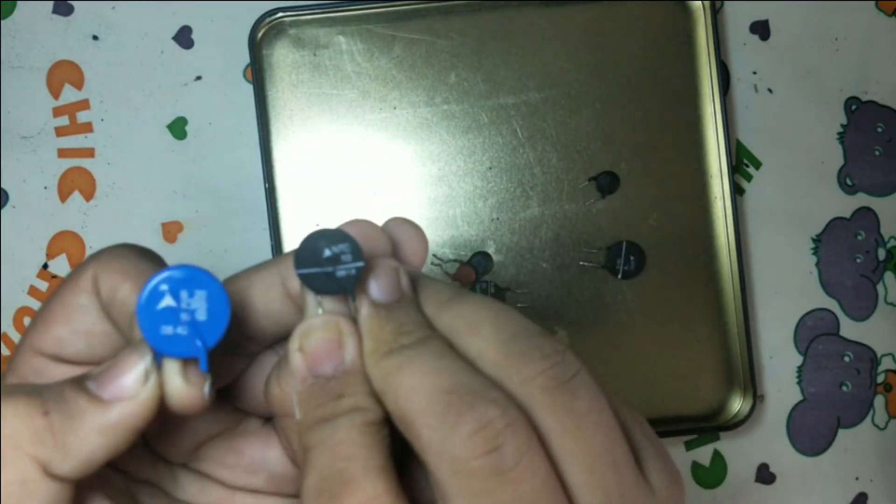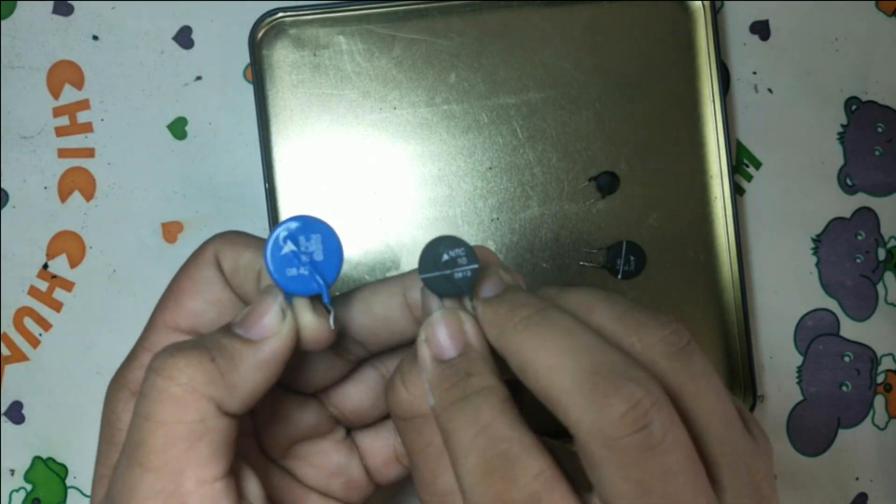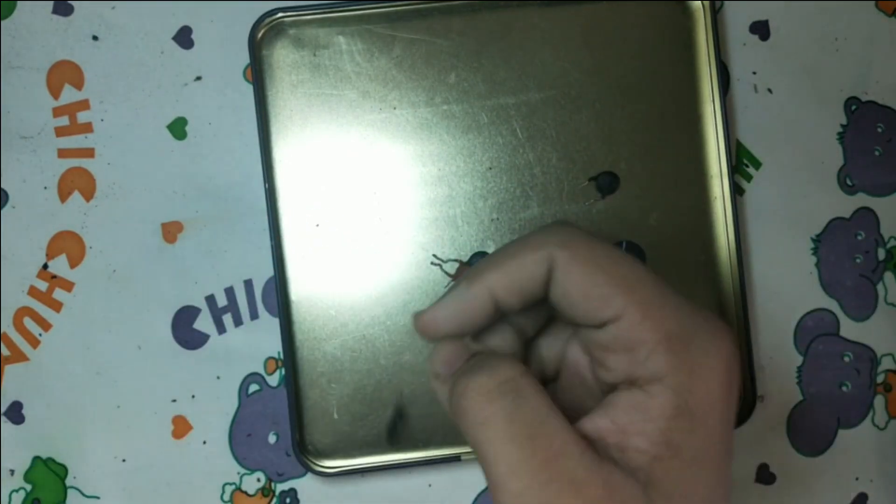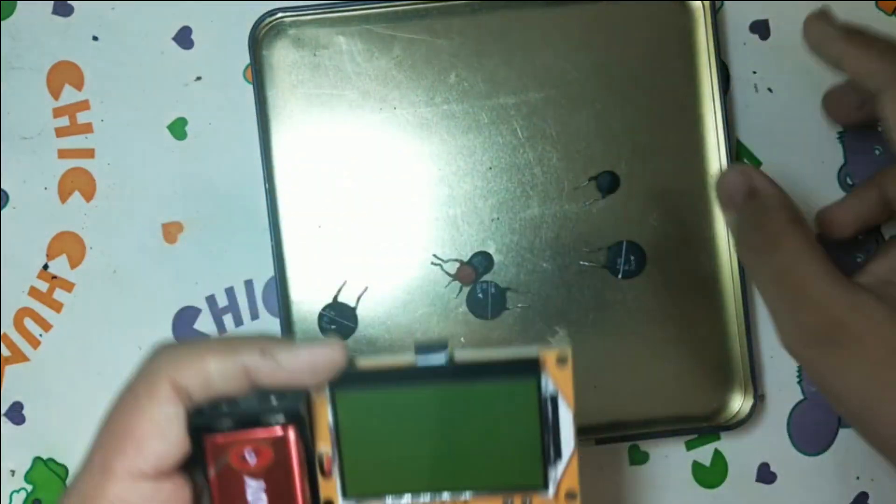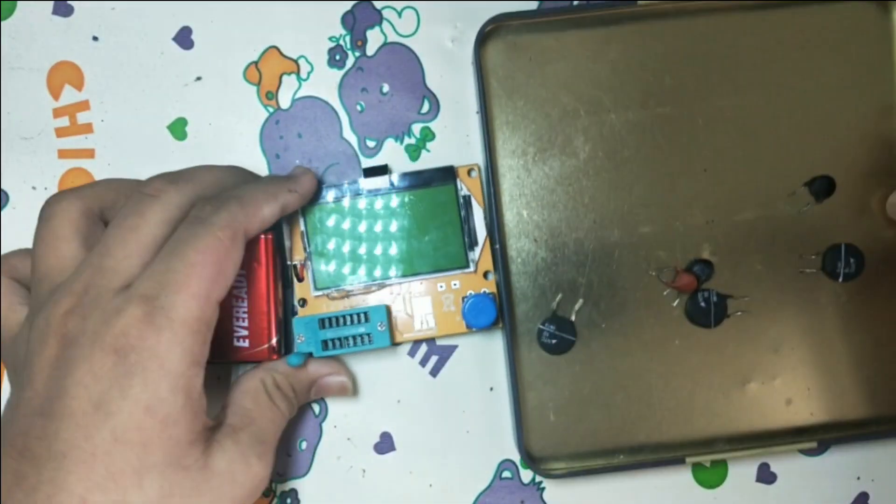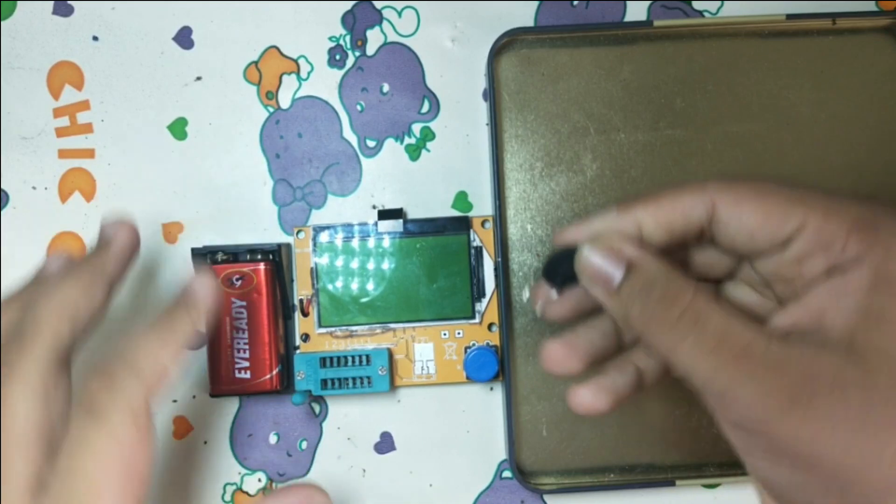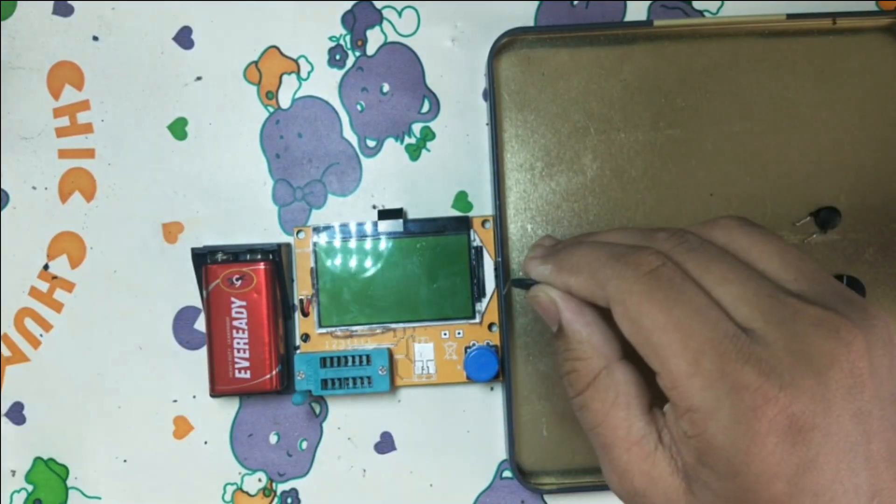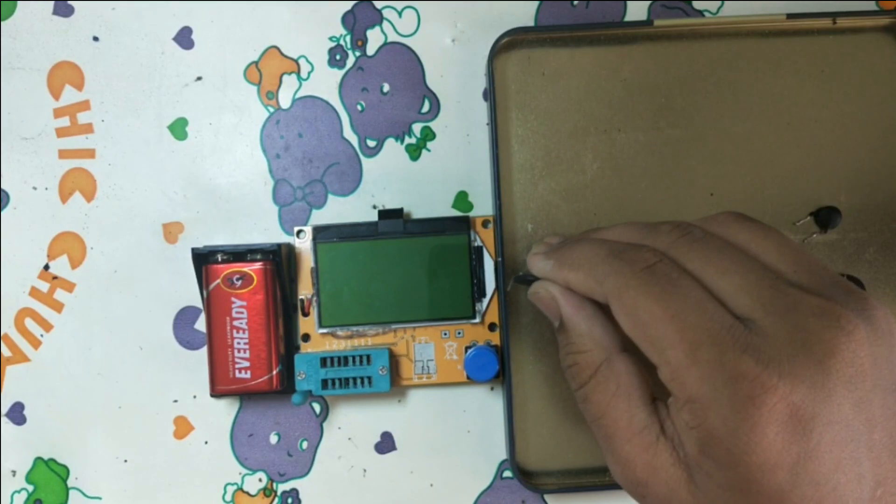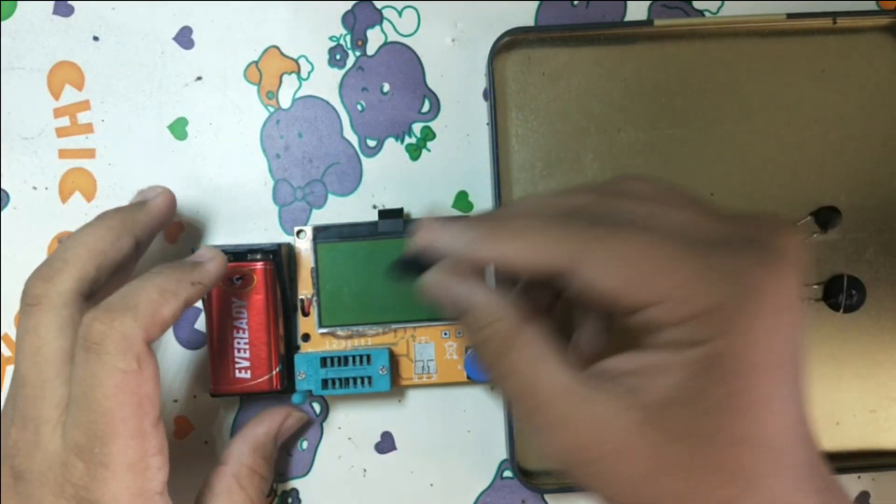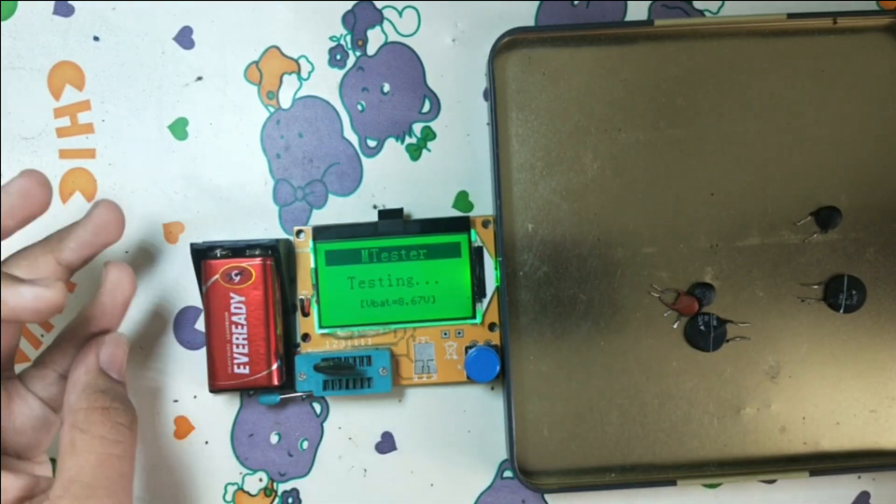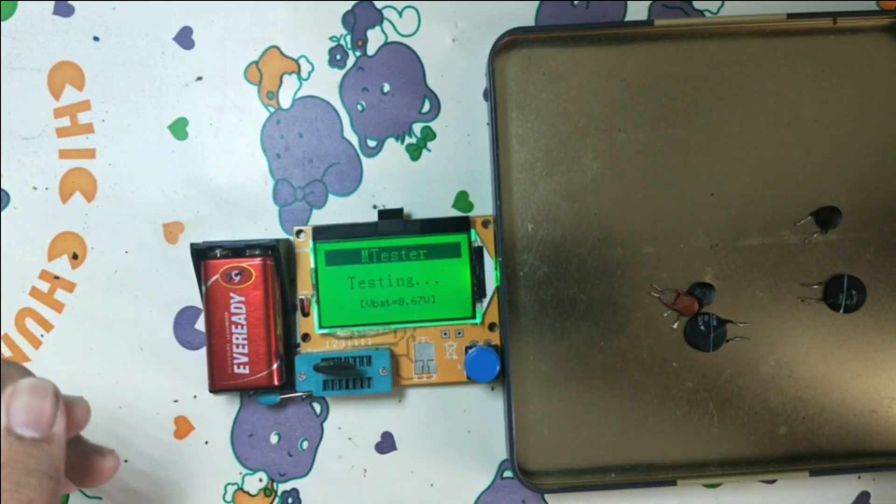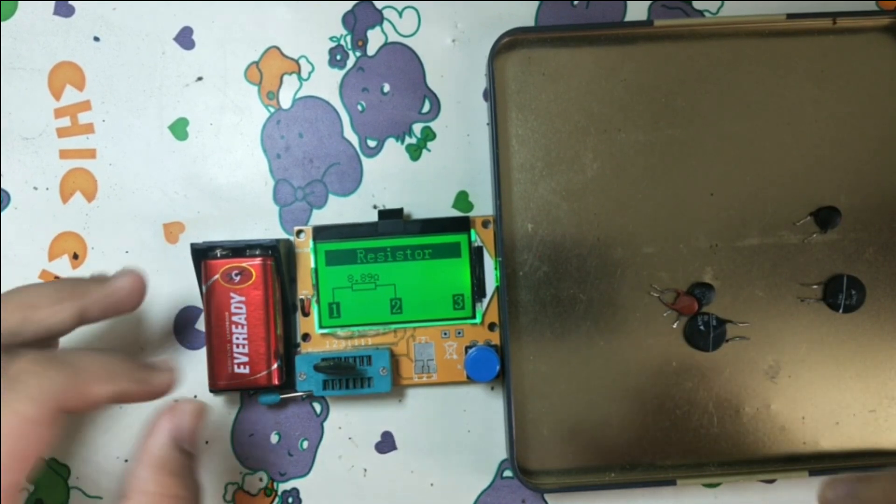First let's take the transistor tester. I'll keep it here and check the value of this. When I test it, it's showing me 8.99 ohms.